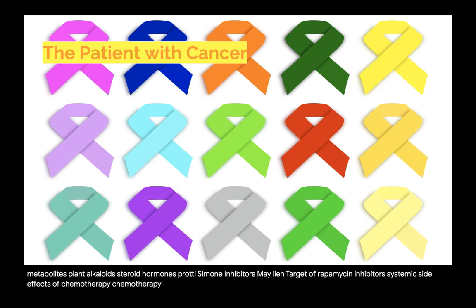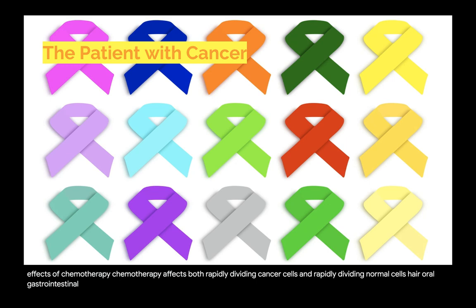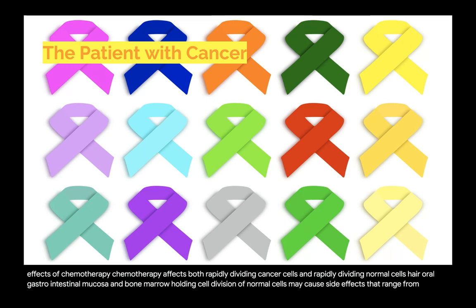Chemotherapy affects both rapidly dividing cancer cells and rapidly dividing normal cells, including hair, oral and gastrointestinal mucosa, and bone marrow. Halting cell division of normal cells may cause side effects that range from mild to life-threatening.